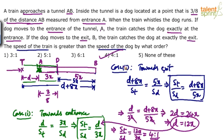While the solution looks lengthy here on screen, it doesn't actually take that much time in an exam. If you have understood the question, you only need to write the two time equations — D/ST = 3x/SD and (D + 8x)/ST = 5x/SD — and then solve them. The ratio of speeds is 4 to 1.